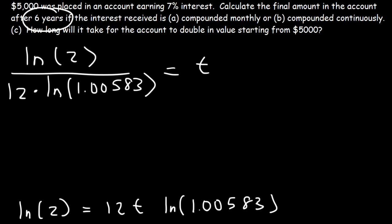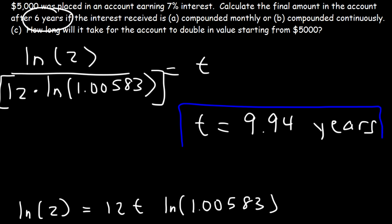And your calculator, if you're not getting the right answer, make sure you enclose this in parentheses. That should help. T is about 9.94 years. So that's how long it's going to take for the account to double if it's compounded monthly.